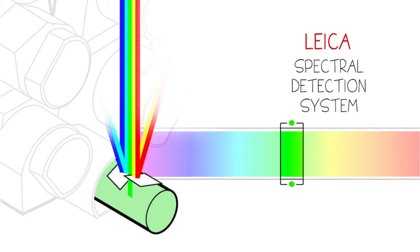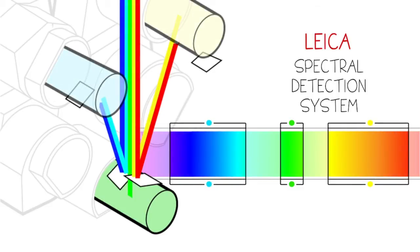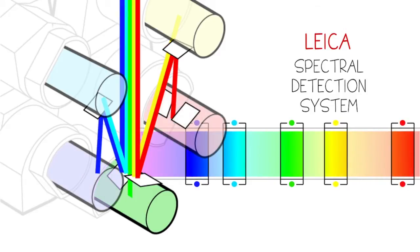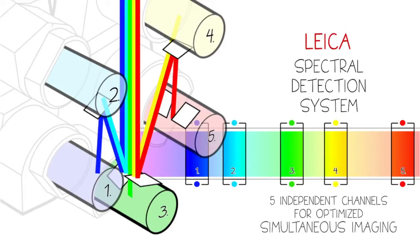The wavelengths that do not fall within a detector's spectral window are redirected to adjacent detectors where the channel selection process is repeated. This elegant arrangement of spectral detectors and sliders offers 5 independent detection channels for simultaneous imaging.